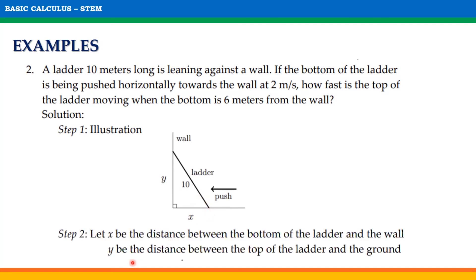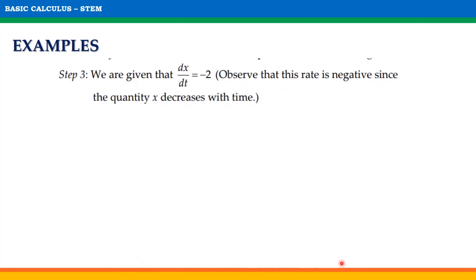For step 2, let x be the distance between the bottom of the ladder and the wall, and y be the distance between the top of the ladder and the ground. Step 3: We are given that dx/dt = -2. Observe that this rate is negative since the quantity x decreases with time. Step 4: We want to find dy/dt at the instant when x = 6.